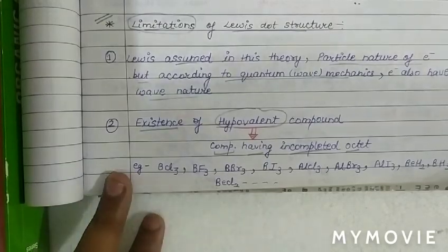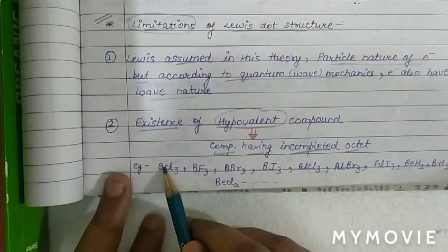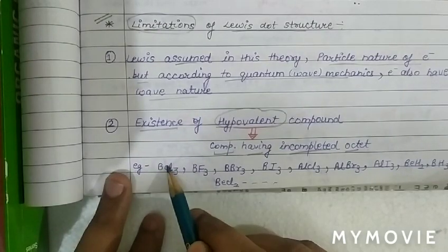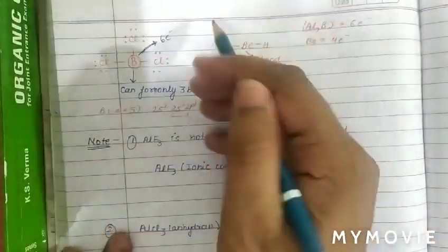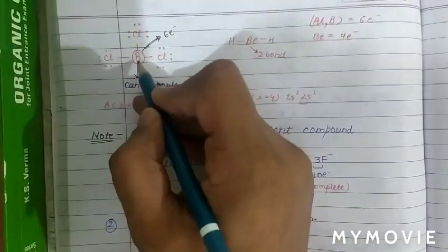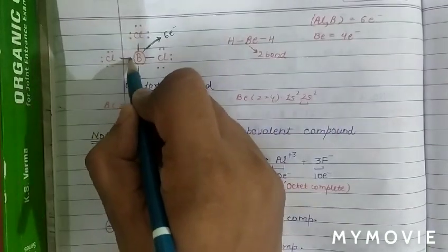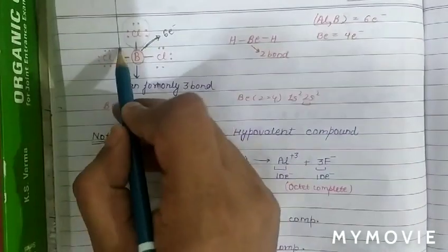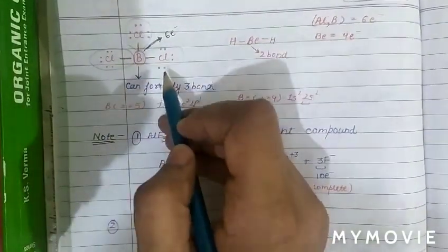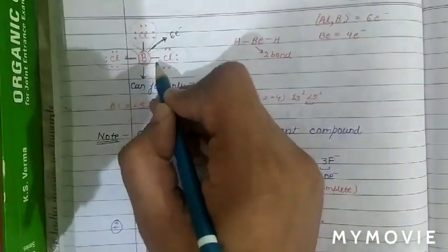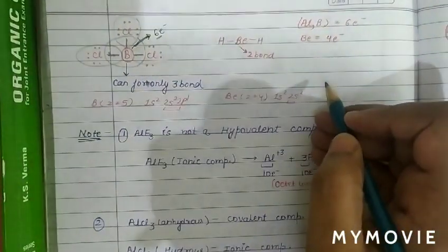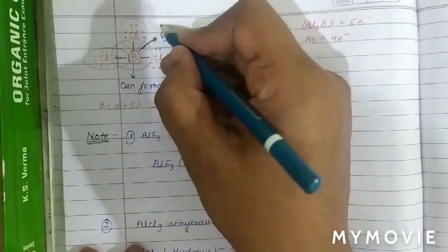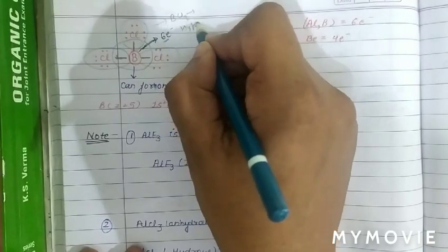In these examples, the central atom has an incompletely filled octet due to which there is deficiency of electrons. For example, in BCl3, boron forms three bonds with chlorine. The octet of chlorine is complete with eight electrons, but boron has only six electrons — so BCl3 is a hypovalent compound.